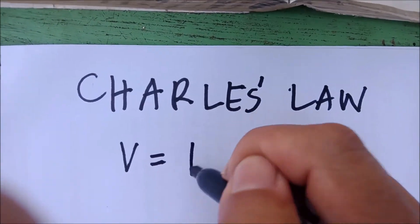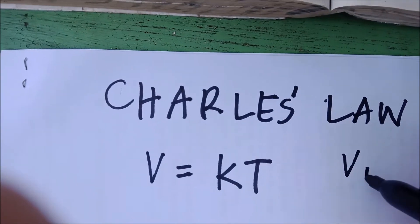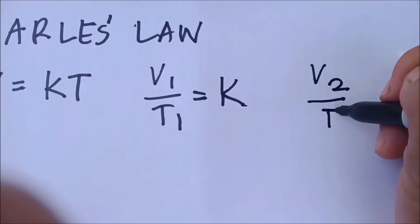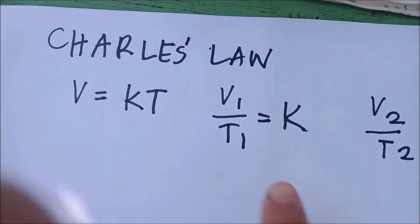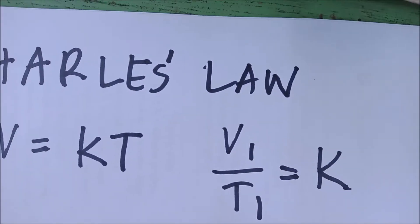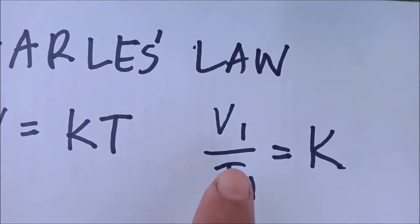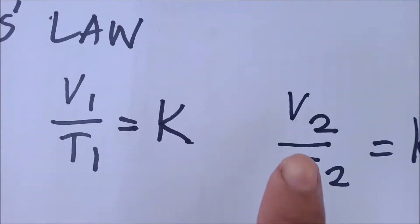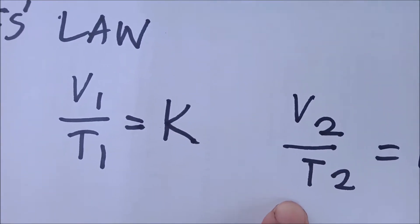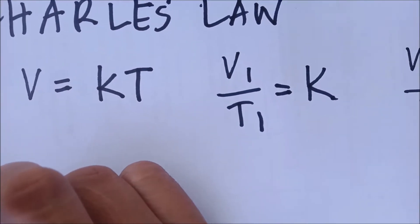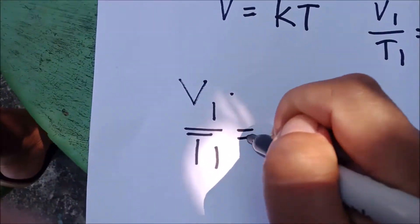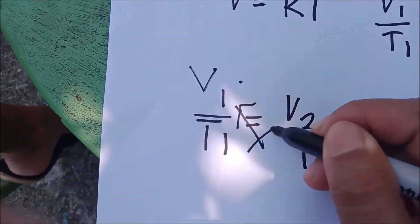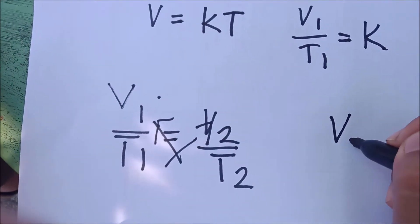The formula is V equals kT, or V1 over T1 equals k. We can also have V2 equals k. V1 is the volume of the gas at T1 — these are the initial values: V1 is the initial volume and T1 is the initial temperature. V2 is the volume of the gas at the final temperature T2. We arrive at the formula: V1 over T1 equals V2 over T2.